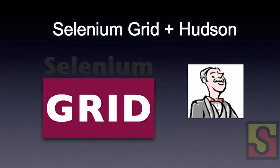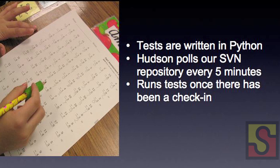This brings us to where we are right now. We're using Selenium Grid in Hudson to run our tests. We have two Mac minis running VMs for XP, Vista, and Ubuntu. We have remote controls for all the major browsers that we test on. We write our tests mainly in Python, check them in after review into SVN, and then have Hudson pull our SVN repository every five minutes for check-ins. Once there's a check-in, it checks the change sets and runs our tests on the grid.